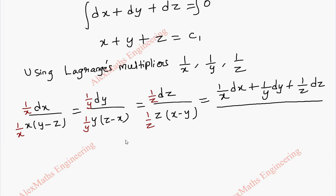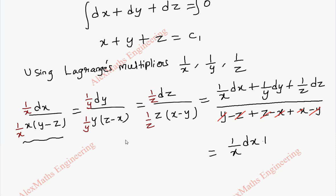For the denominator, when we apply 1/x the x cancels leaving y−z; similarly y cancels leaving z−x, and z cancels leaving x−y. Now adding the denominators: (y−z) + (z−x) + (x−y), all terms cancel and we get 0. So this gives (1/x)dx + (1/y)dy + (1/z)dz all over 0.